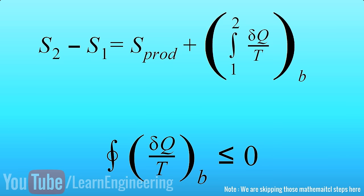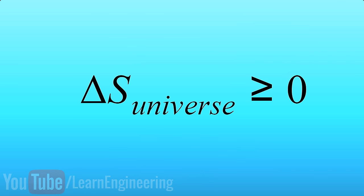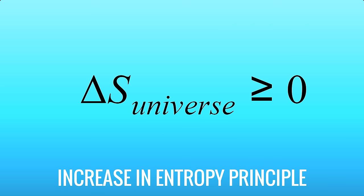we can prove mathematically that, during a spontaneous process, the entropy of the universe always increases. This is known as the increase in entropy principle. This is a very useful form of the second law.